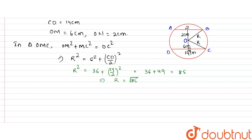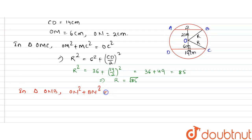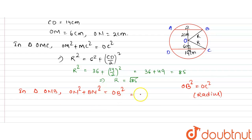Now we calculate AB. If we find BN, we can double it to get AB. In triangle ONB: ON² + BN² = OB². Since OB and OC are both radii, OB² = r² = 85. So: 2² + BN² = 85.